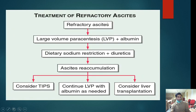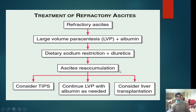For refractory ascites, the next step is large volume paracentesis. However, large volume paracentesis will aggravate hypoalbuminemia — as albumin is already reduced — so you must replace it with albumin infusion. You continue dietary sodium restriction with high-dose diuretics along with large volume paracentesis and albumin. If still not controlled, consider TIPS or continue large volume paracentesis with albumin as needed. If everything fails, liver transplantation is the only treatment of choice.